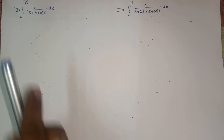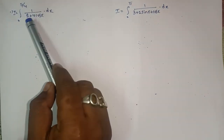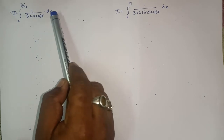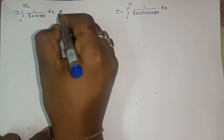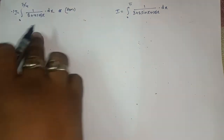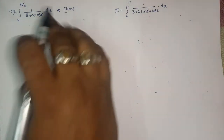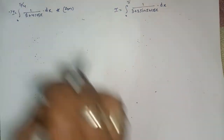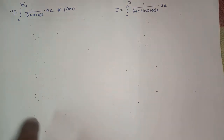The next one is: I equals integral from 0 to π/4 of 1/(5 + 4cosx) dx. This is a very important sum — it carries four marks. Both this sum and the next one are very, very important from the board exam point of view. Now the first thing is to guess the type: which method and which type will come here?